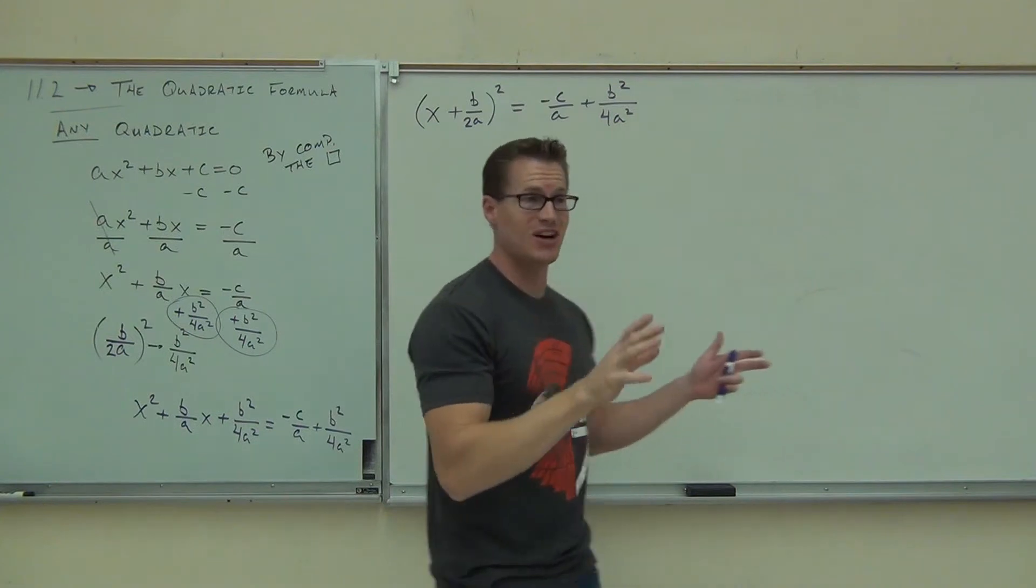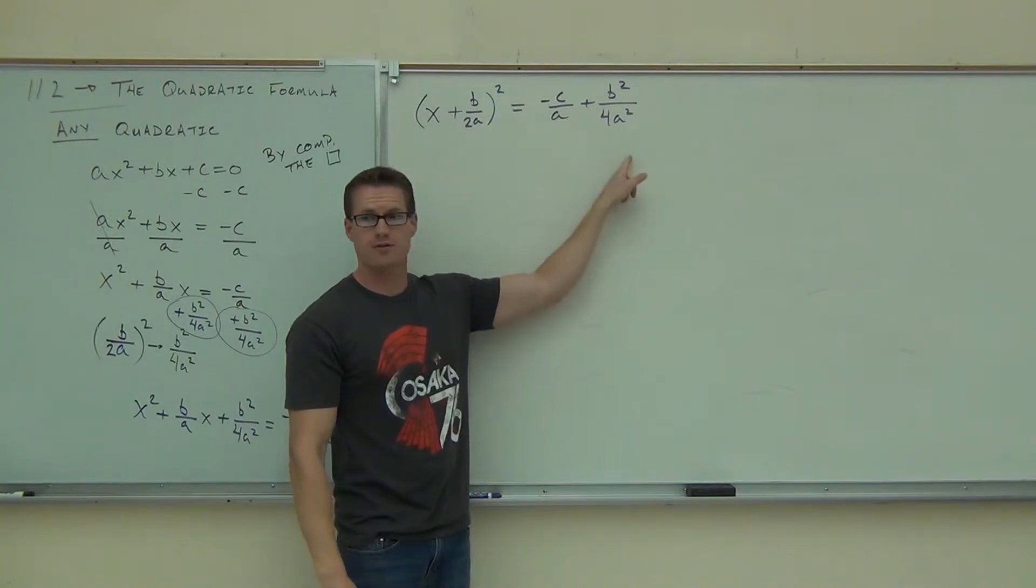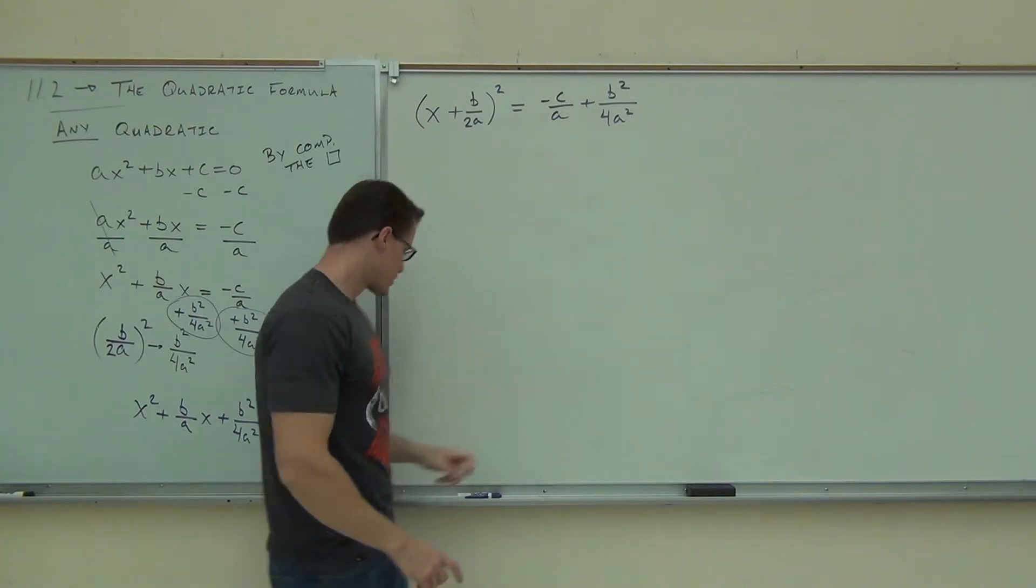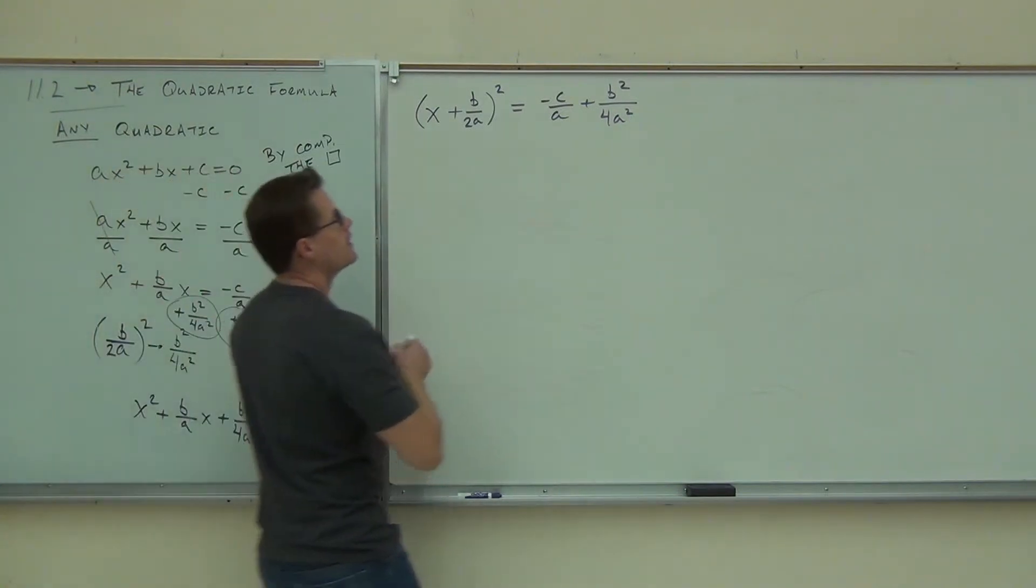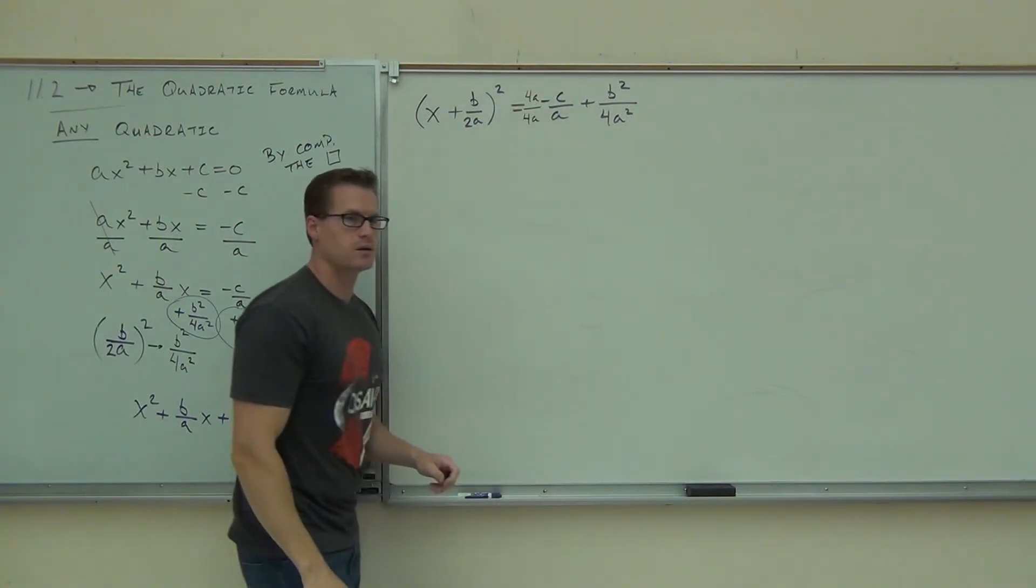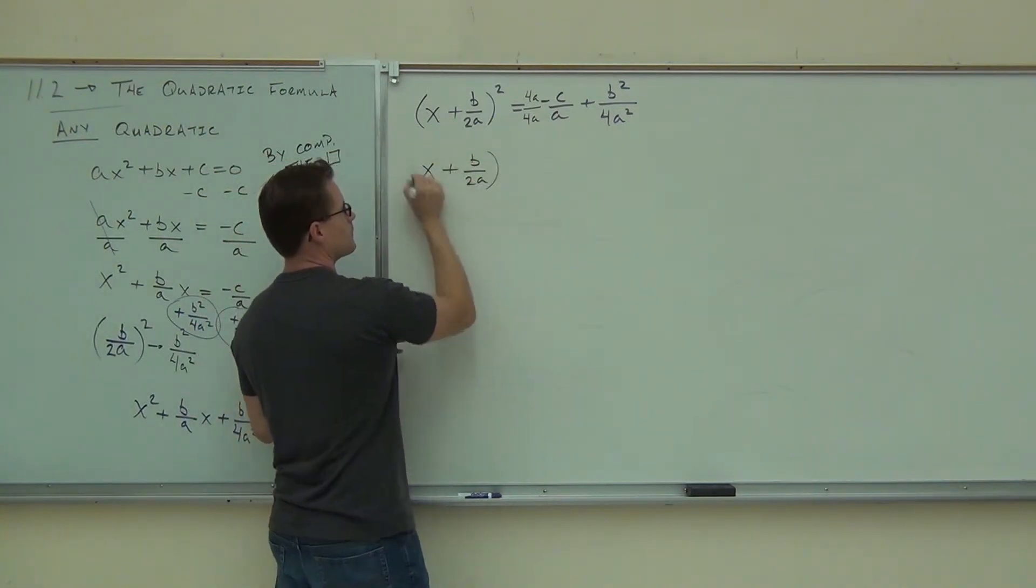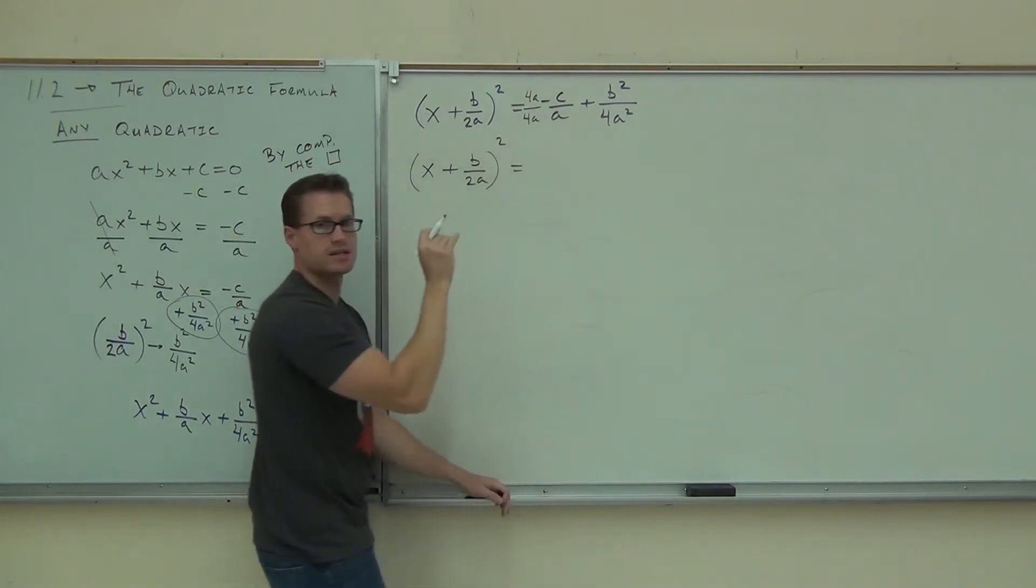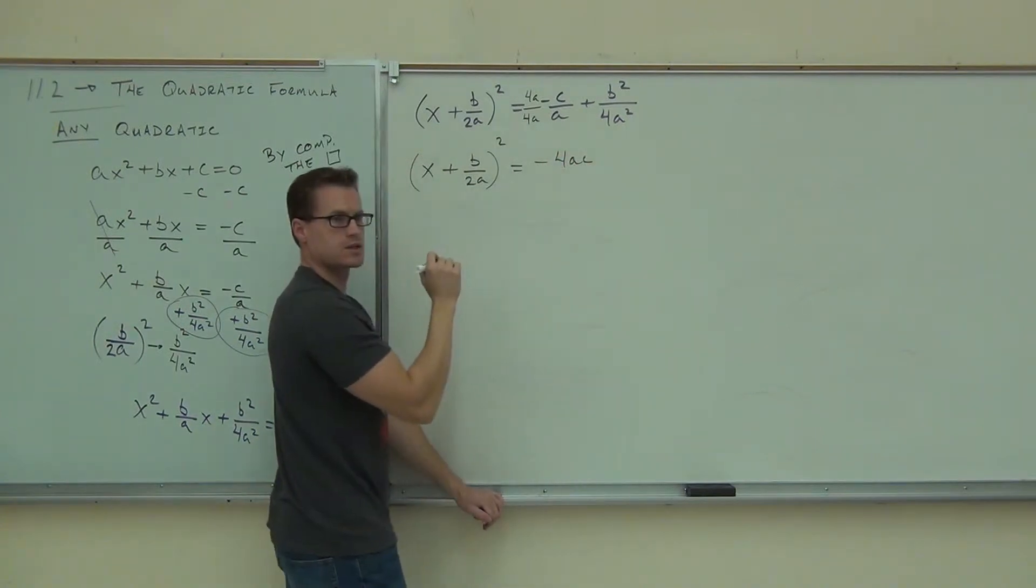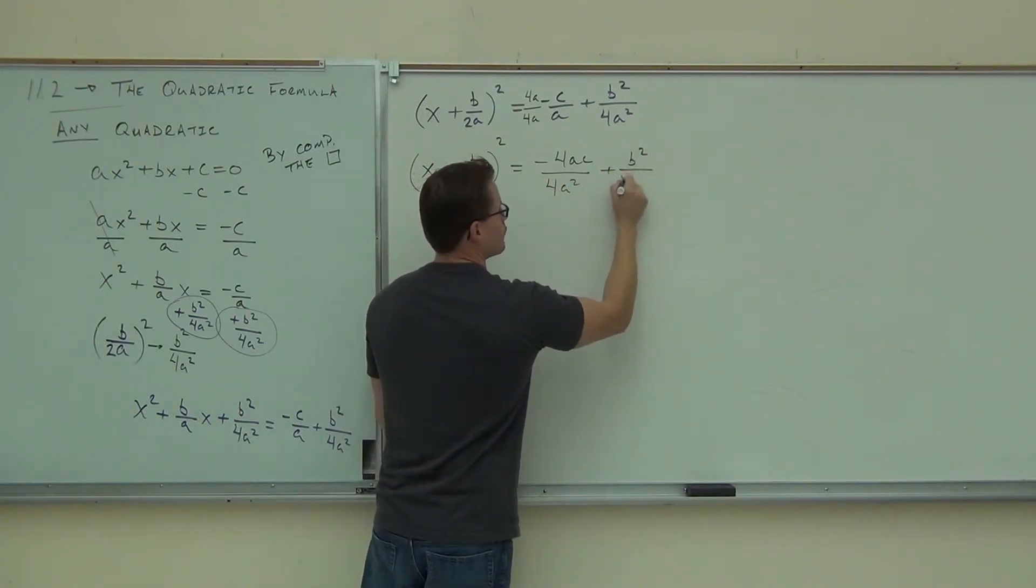Let's work on the right-hand side because right now that thing is just ugly. How do you combine two fractions? Common denominator. Now, fortunately, in Chapter 7, you learned how to find a common denominator with this. Our LCD here would be 4a squared. So, what I'm going to do to find a common denominator, I'm going to multiply this by 4a over 4a.